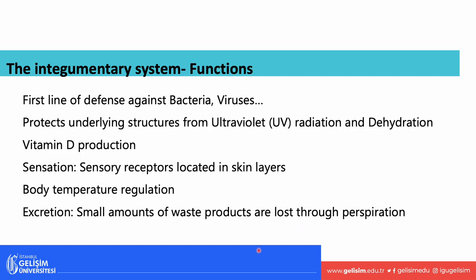The functions of the integumentary system are many. Your skin, as I had mentioned, is an organ — it's the largest organ of your body, about 22 square feet in area. The skin is also the first line of defense. The skin also protects against UV rays and ultraviolet radiation from the sun. In addition to that, the skin also helps to keep water inside, so it prevents dehydration. Skin is also responsible for the production of vitamin D, which is extremely important. Vitamin D also plays many roles beyond calcium intake.